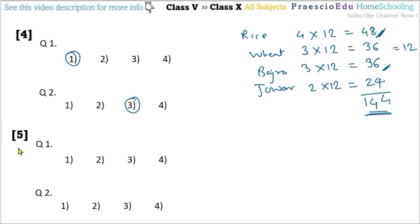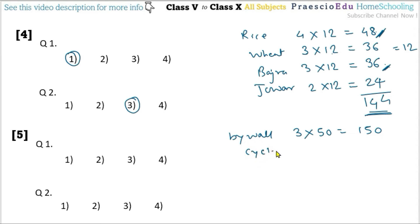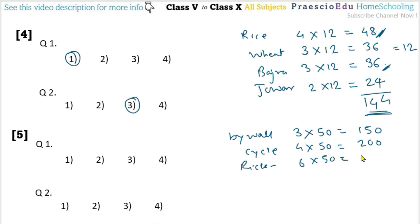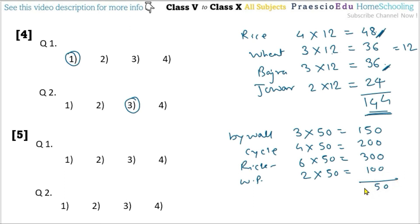Pictograph number 5 shows the way of coming to school and number of students. Each picture represents 50 students. By walk: 3 images × 50 = 150 students. By cycle: 4 images × 50 = 200 students. By rickshaw: 6 images × 50 = 300 students. With parents: 2 images × 50 = 100 students. Total is 750 students.